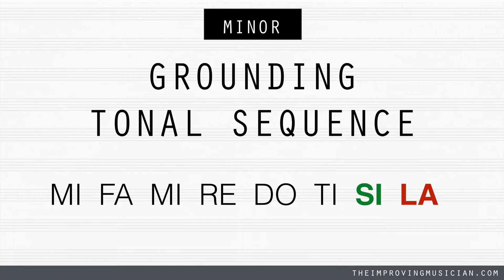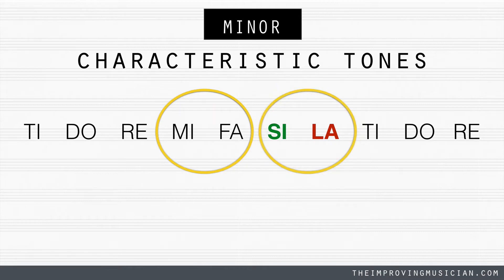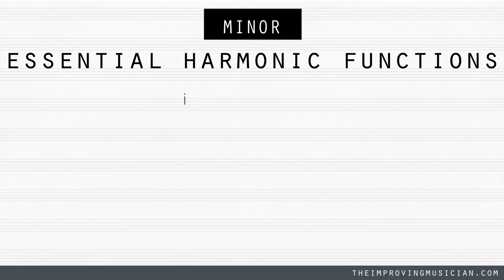Therefore our grounding sequence is Mi Fa Mi Re Do Ti Si La. Our essential tones are again Mi Fa Mi Fa Mi and La Si La. Our essential chords: we have a minor I chord, a minor IV chord, and a major V chord. Mi Fa Mi Re Do Ti Si La.